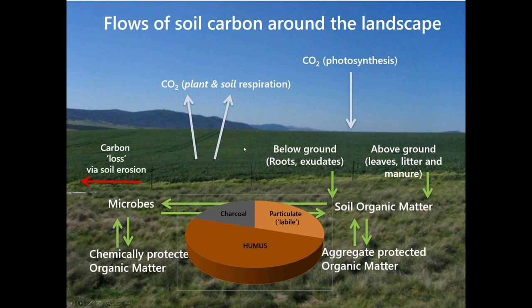Carbon is also lost from the system — plants and soil microbes respire, releasing carbon dioxide back to the atmosphere. Additionally, carbon can be lost via soil erosion: soil particles leaving a site can be enriched with soil carbon, representing a real loss. This is the key point of the whole presentation — it's about managing the flows of carbon around the landscape, not just the stocks. It's the size of the arrows that matter.